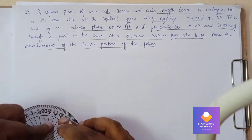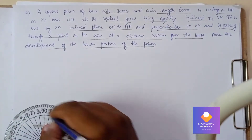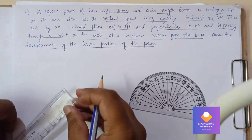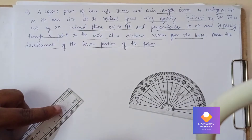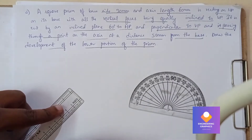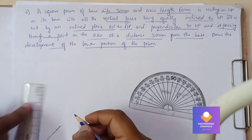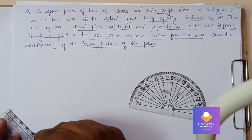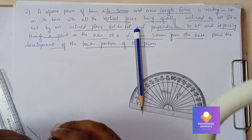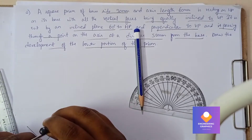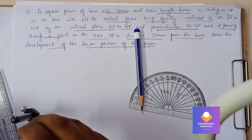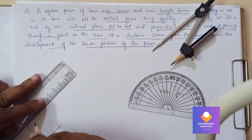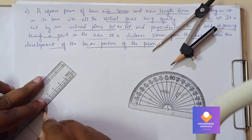We need to draw the development of the lower portion of the prism. First, take a reference point, put the protractor and mark for 45 degrees. Now draw a line of length 30mm passing through that point. From this end also, take the compass and cut the arc for 30mm — you can measure any one of the edges from the reference point. Then join it to get the square with respect to corner position.